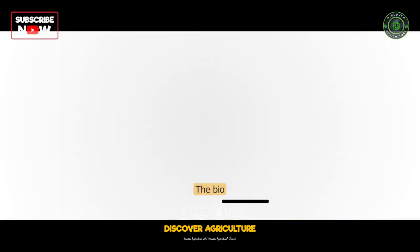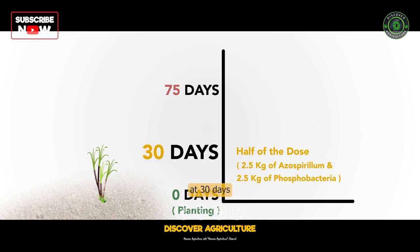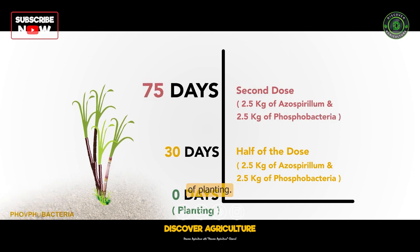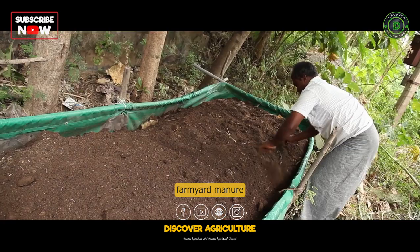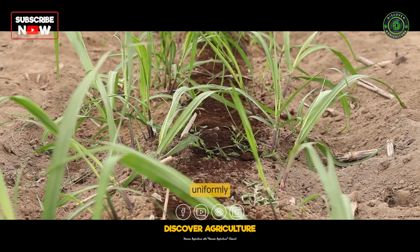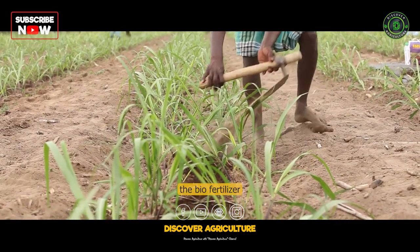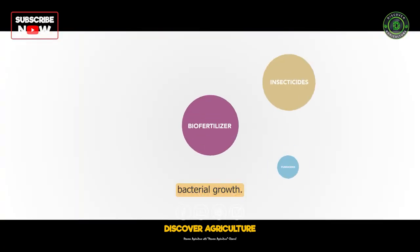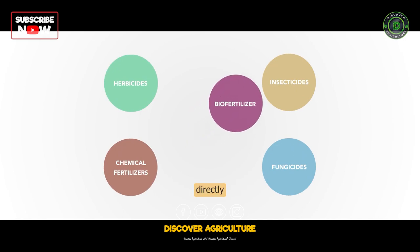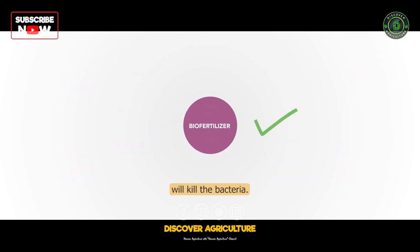For soil application, the biofertilizer has to be applied in two doses. Half the dose — 2.5 kg Azospirillum and 2.5 kg phosphobacteria — should be applied at 30 days after planting, and a second dose at 75 days after planting. The biofertilizer should be mixed thoroughly with 500 kg of powdered farmyard manure, compost, or press mud and applied uniformly near the base of the crop. Application should be followed with slight earthing up to cover the biofertilizer. The crop must be irrigated immediately to ensure optimum moisture for bacterial growth. Biofertilizer should not be mixed directly with insecticides, fungicides, herbicides, or chemical fertilizers, as these chemicals at higher concentrations will kill the bacteria.